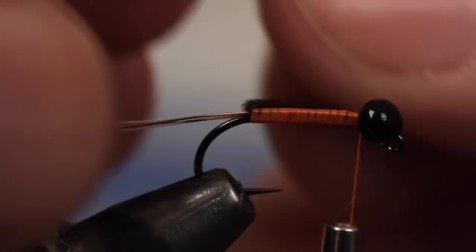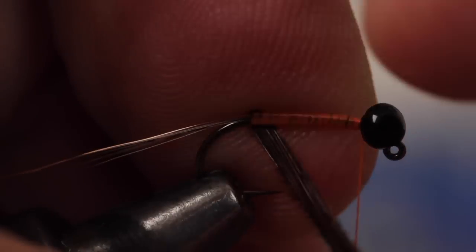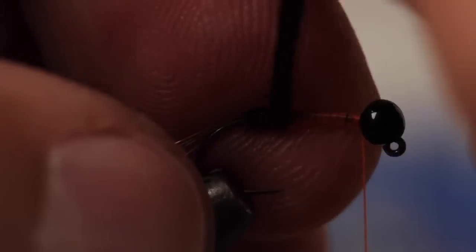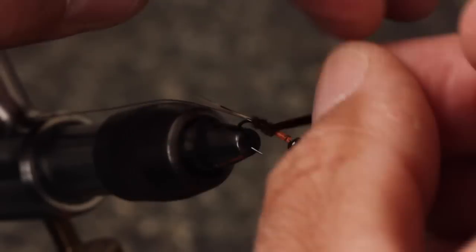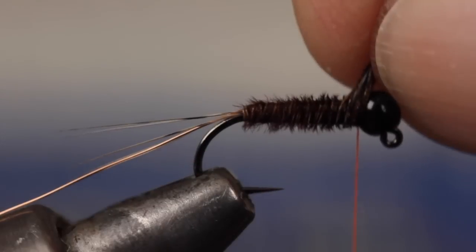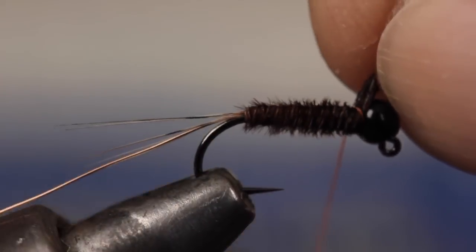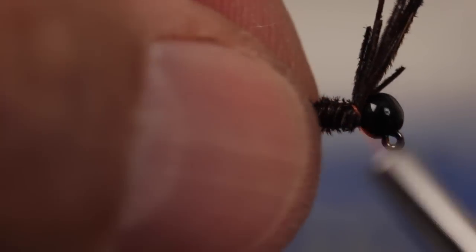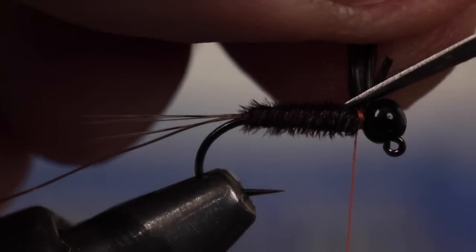Get hold of the pheasant tail fibers and begin making touching wraps around the hook shank to form the body of the fly. Because the fibers are thicker near their butts, you should end up with a nicely tapered body. When you reach the bead, tie the pheasant tail off with nice firm thread wraps. Once they're secured, reach in with your tying scissors and snip the butts off close.